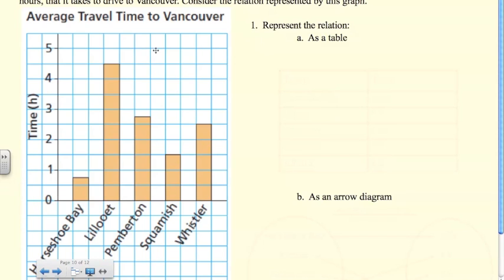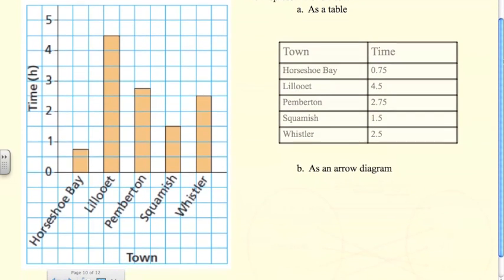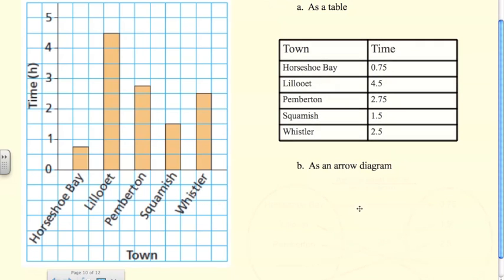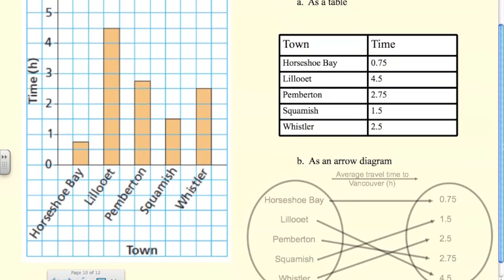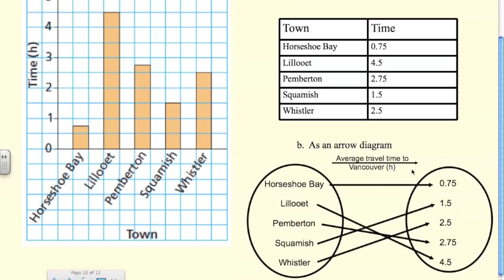This is a similar question but instead of talking about breeds of dogs and heights, we're talking about travel time to Vancouver from these towns: Horseshoe Bay, Lillooet, Pemberton, Squamish, and Whistler. To represent this as a table there you are, and as an arrow diagram is right here. Don't forget that we always like to illustrate the association. In this case the association is average travel time to Vancouver.